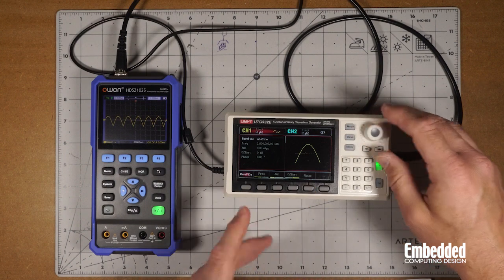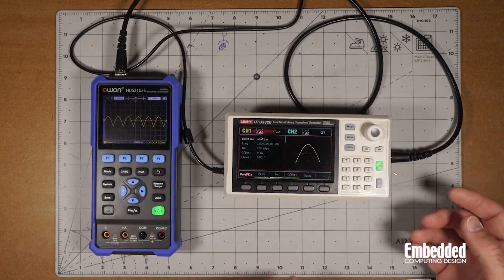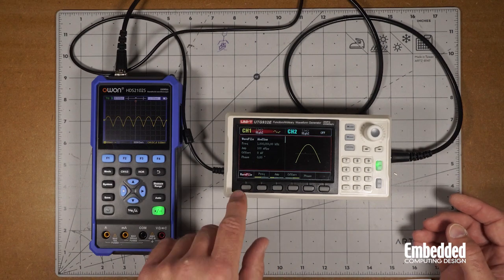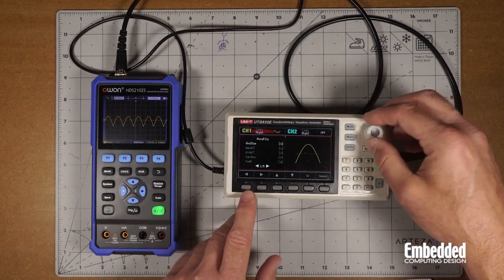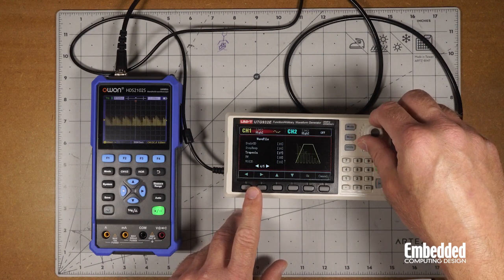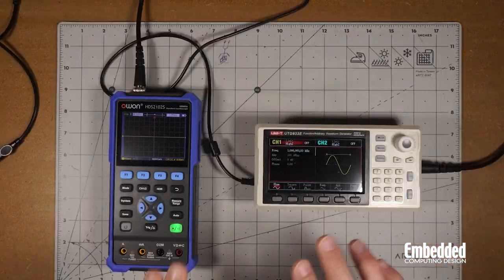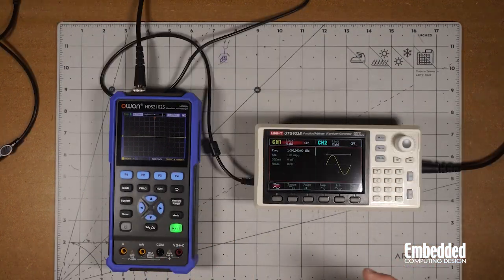For arbitrary waves, we've got 24 different built-in waveforms, and you can load them externally as well. We'll do wave file internal. All kinds of different stuff the UTG932E can do with different types of modulation.